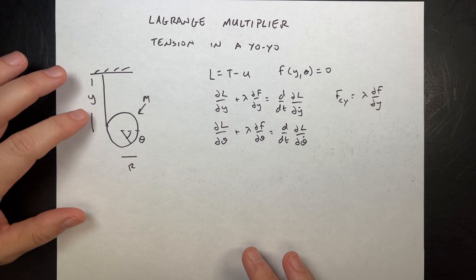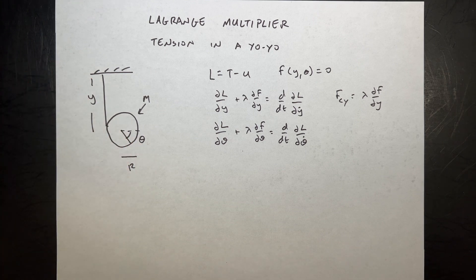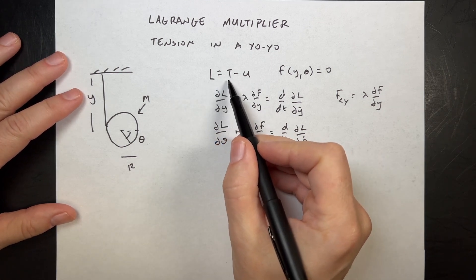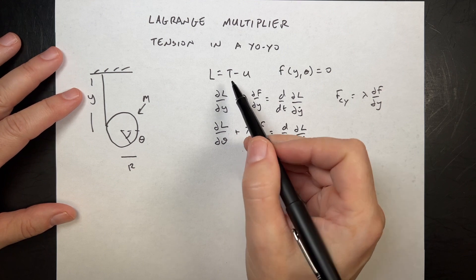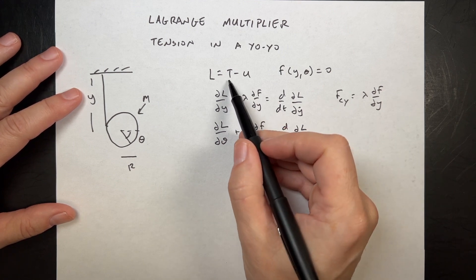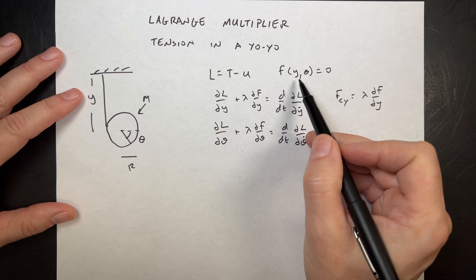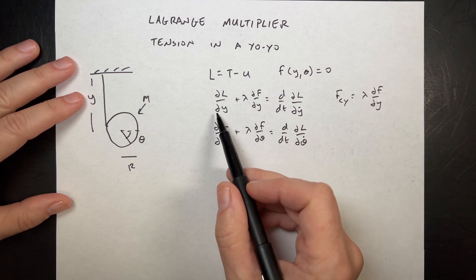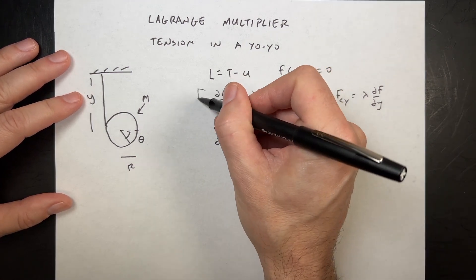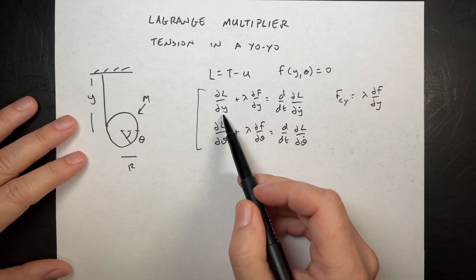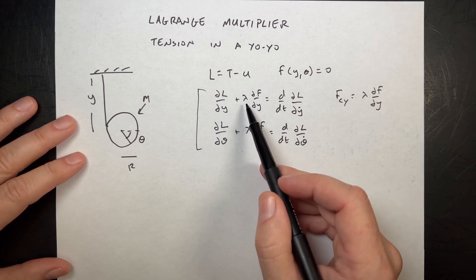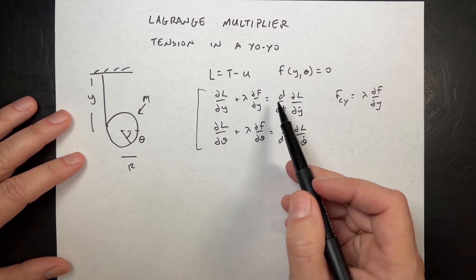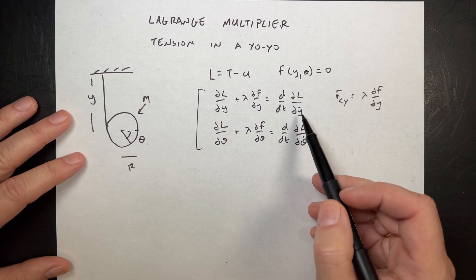I need to have two degrees of freedom in this case — under-constrain the system. The Lagrangian is defined as the kinetic energy minus the potential. Then we define an equation of constraint relating the two variables, and we get two modified Euler-Lagrange equations: the partial of L with respect to Y plus lambda times the partial of F with respect to Y equals the time derivative of the partial of L with respect to Y-dot.